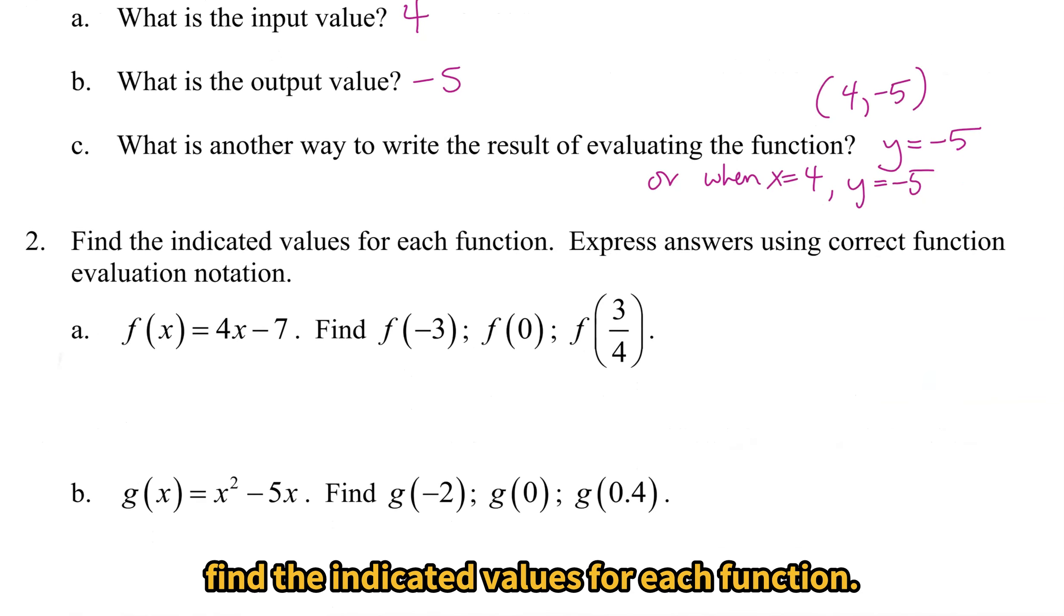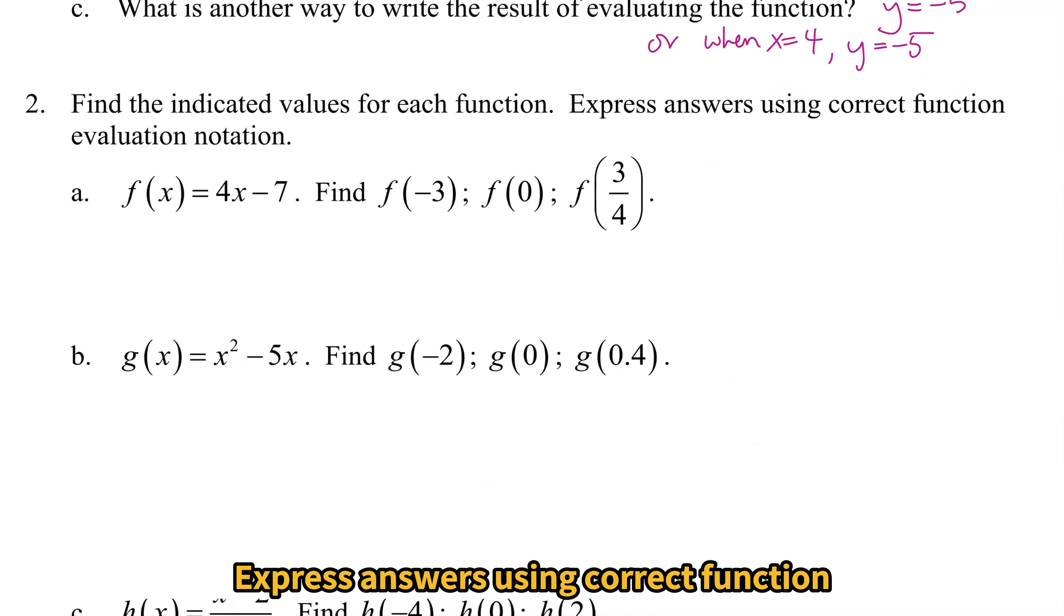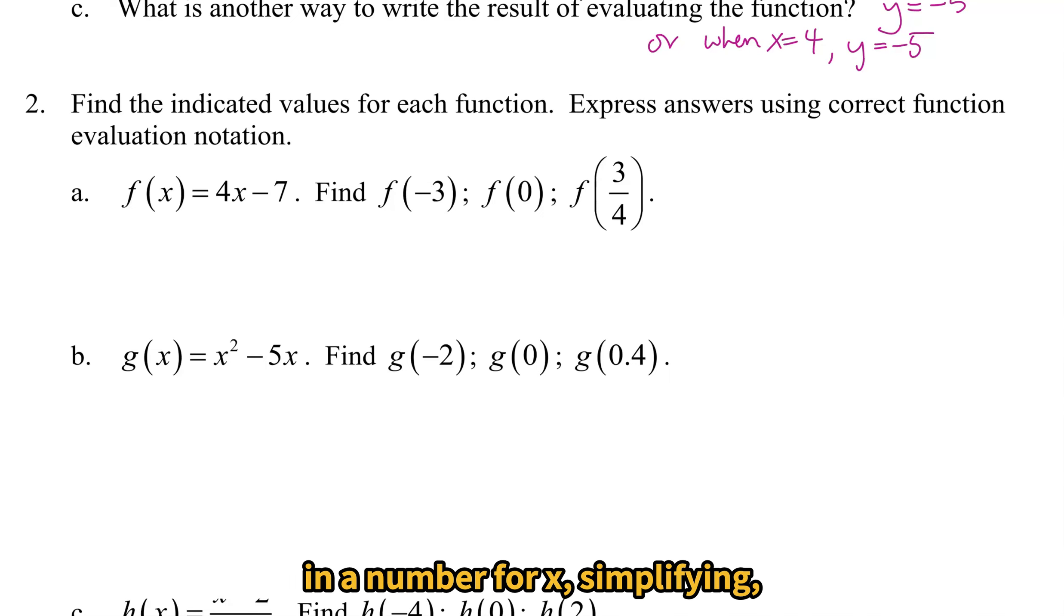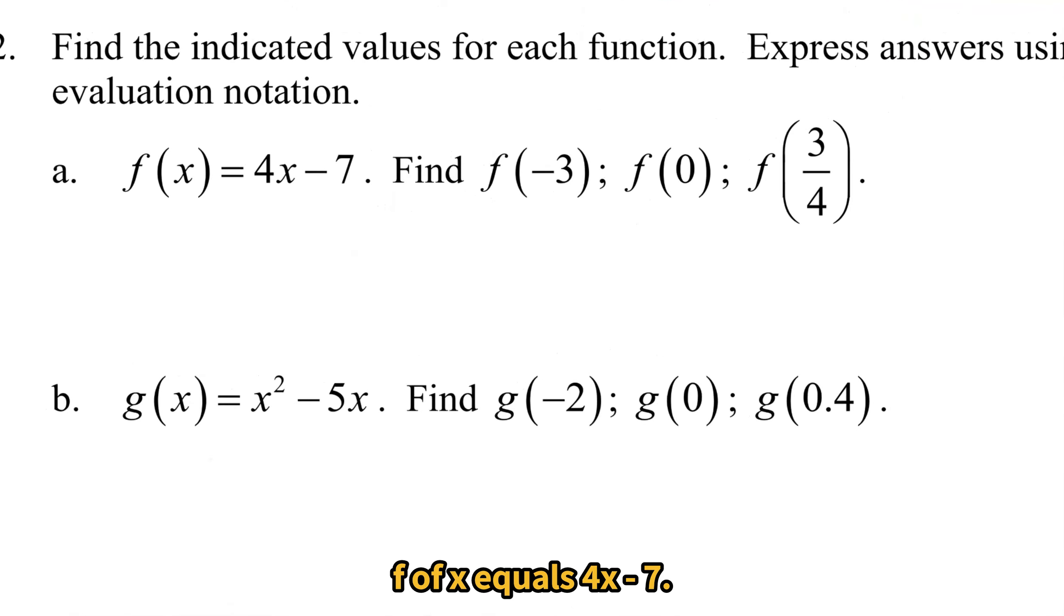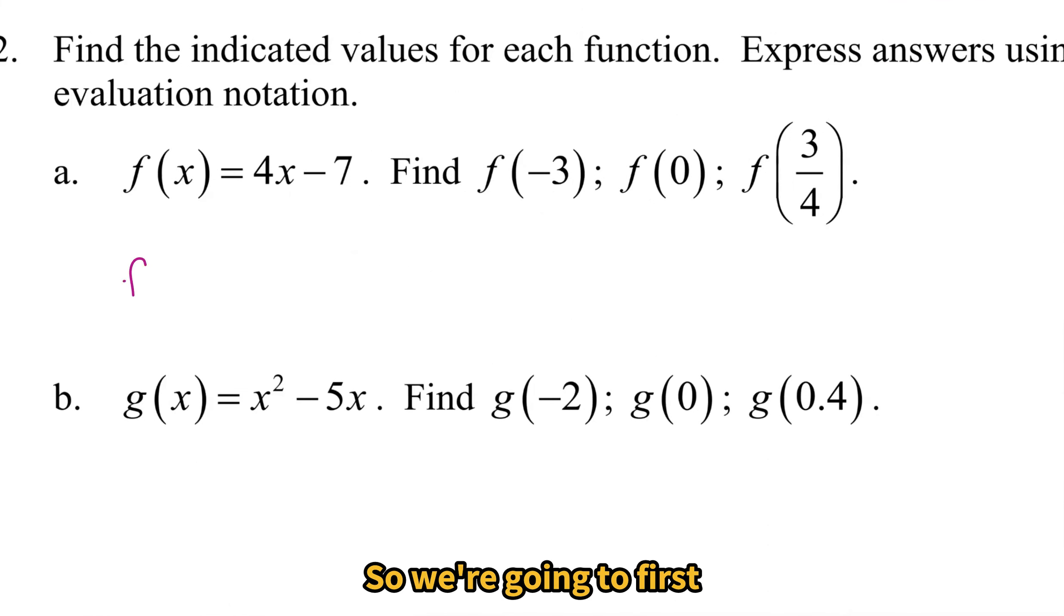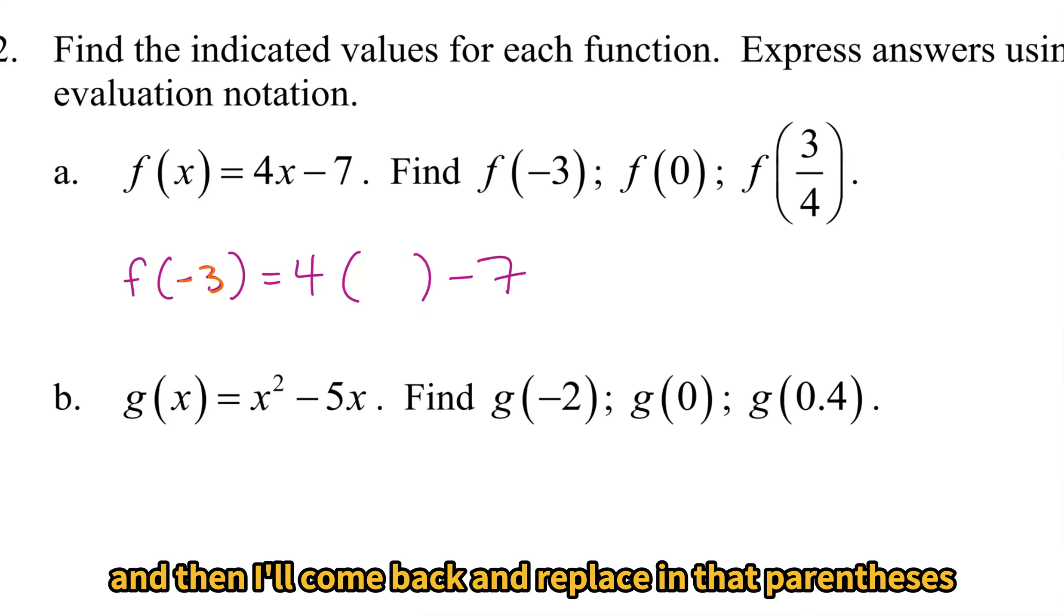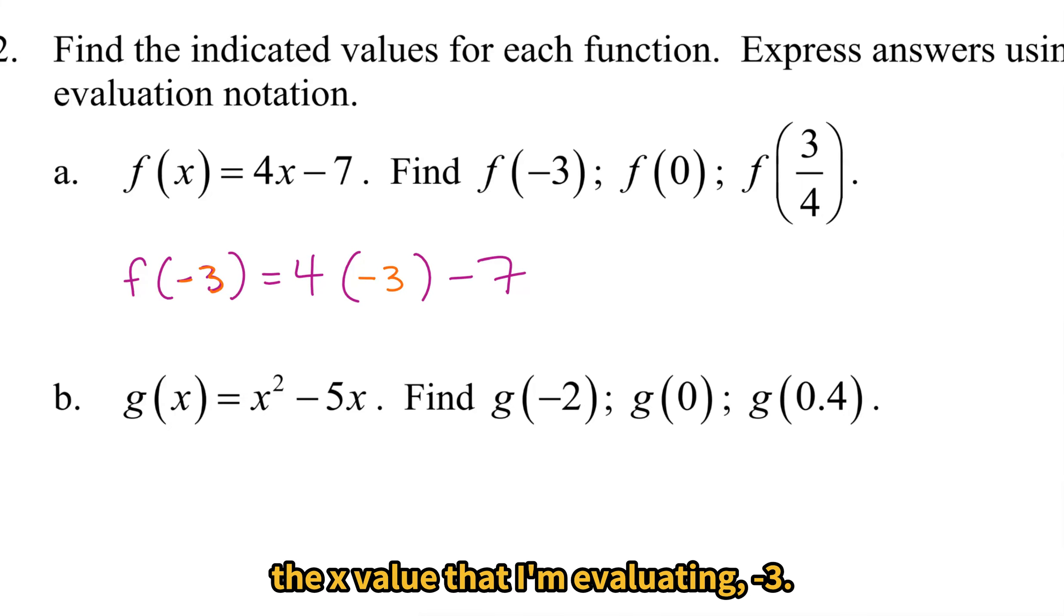In the next section, find the indicated values for each function, express answers using correct function evaluation notation. So we're going to practice this idea of plugging in a number for x, simplifying, and getting an answer. In our first example, f(x) = 4x - 7, so we're going to first start out and find f(-3). Since -3 is replacing the x, I'm going to put a parenthesis where the x is, and then I'll come back and replace in that parenthesis the x value that I'm evaluating, -3.